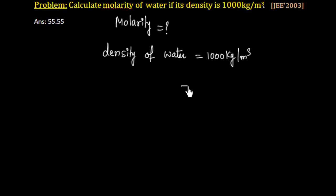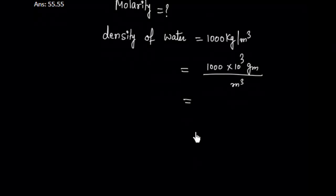1000 kg per meter cube - let us convert this into grams per meter cube. We can convert meter cube into liters.